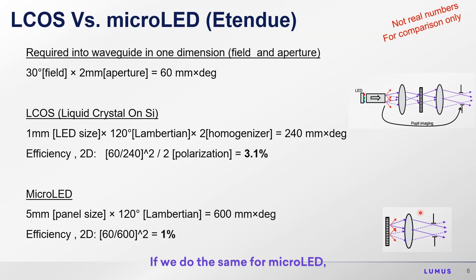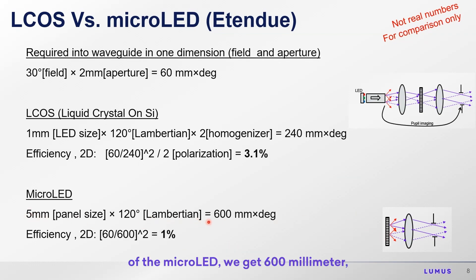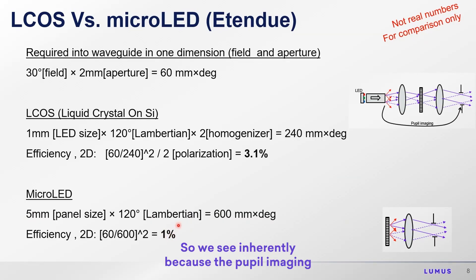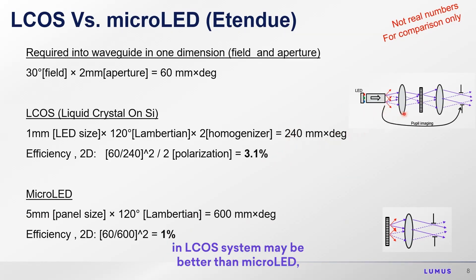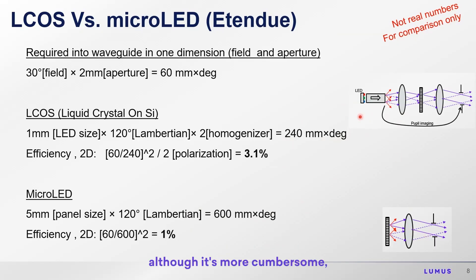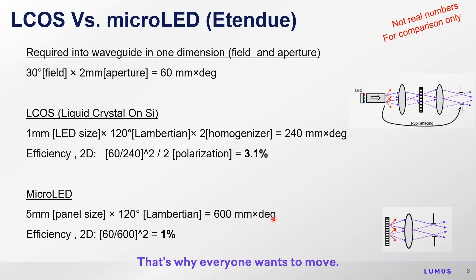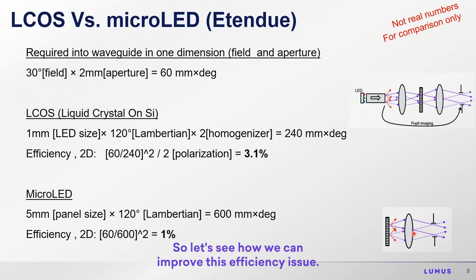If we do the same for micro LED — using a general number of 5 micron size for the micro LED — we get 600 millimeter-degrees, and that's only about 1% efficiency. So we see that inherently, because of pupil imaging and the small source of the LED, the LCoS system may be more efficient than micro LED, although it's a more cumbersome and complicated projector that isn't as small. That's why everyone wants to move to micro LED.